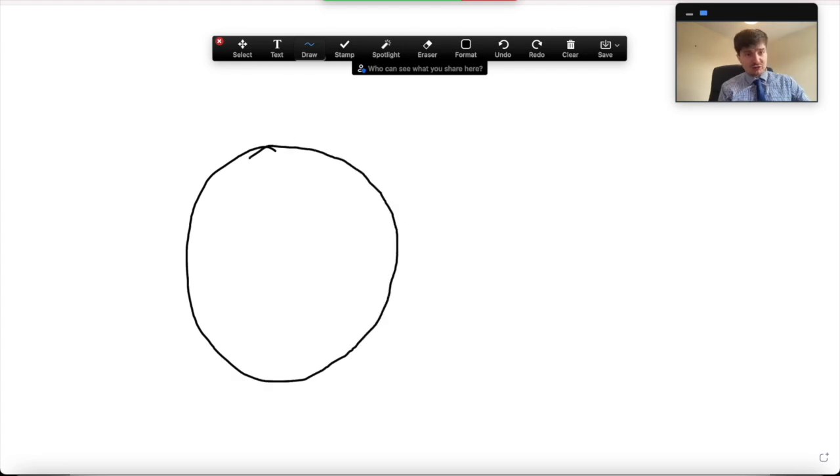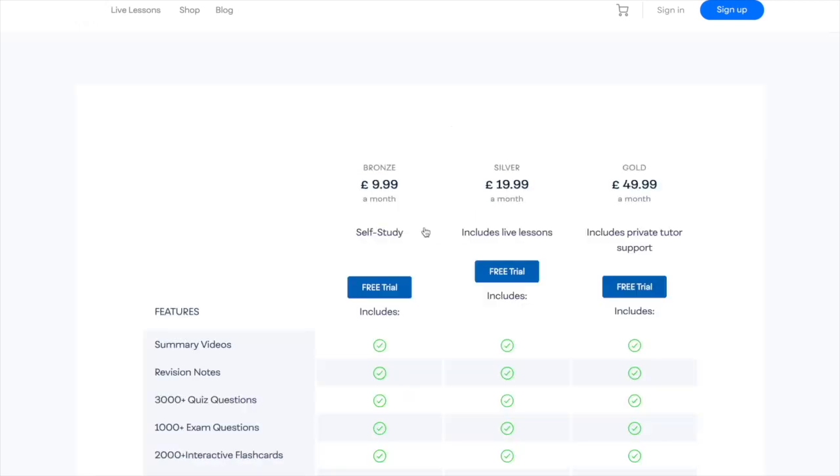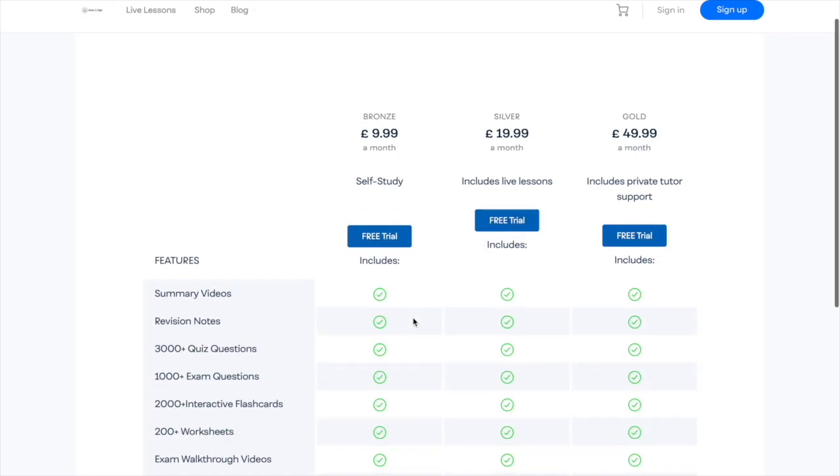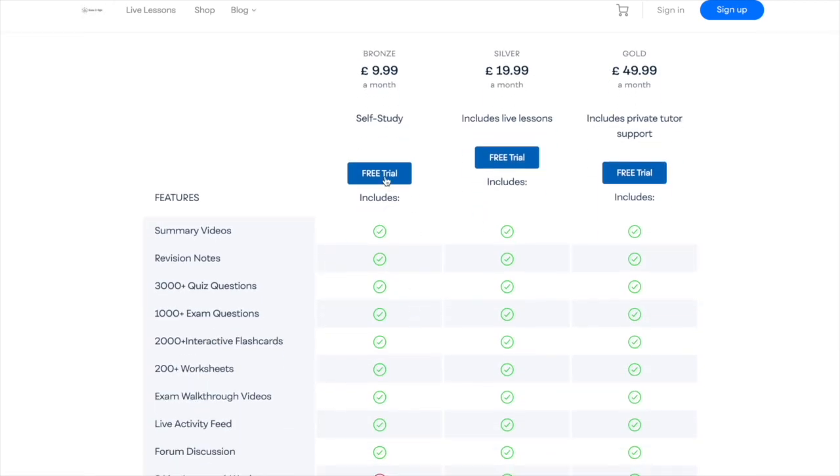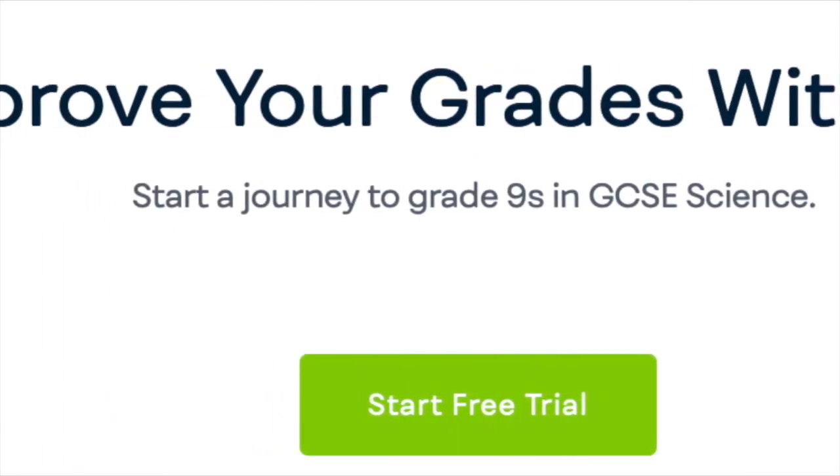These are included in our silver and gold membership. This means that for an extra £10 a month, you can access at least 12 hours of lessons a month. That's under £1 an hour, which is incredibly cheap. Still not convinced? Try us completely free for seven days and cancel any time, completely free of charge. We offer this because we're convinced that you'll love us. So try us now.